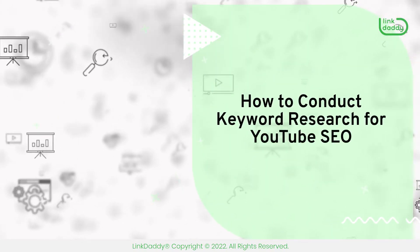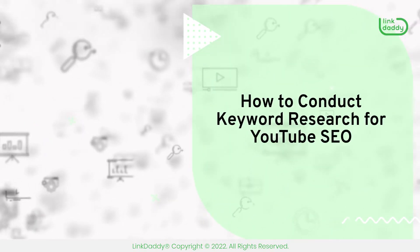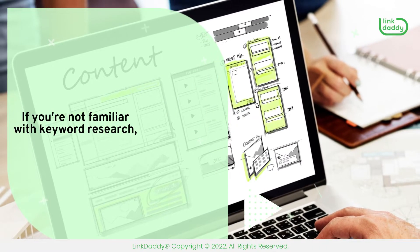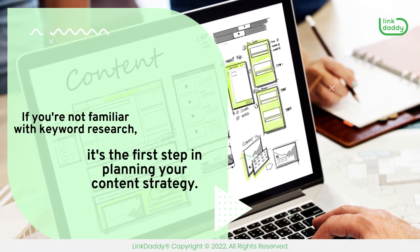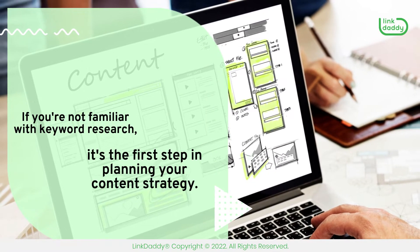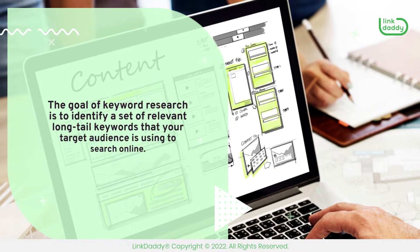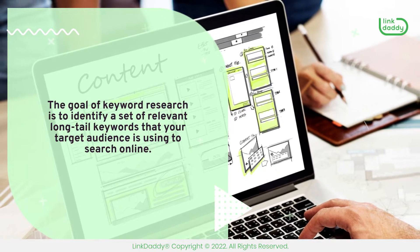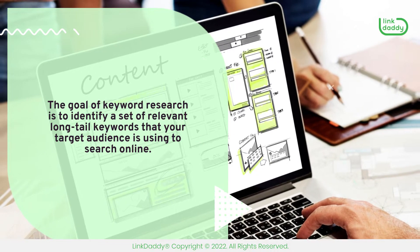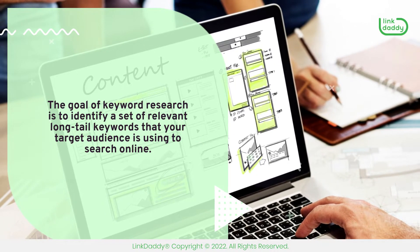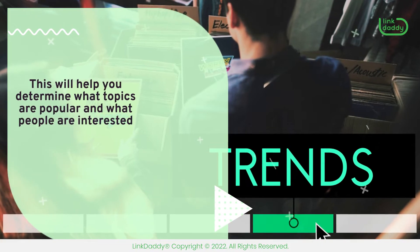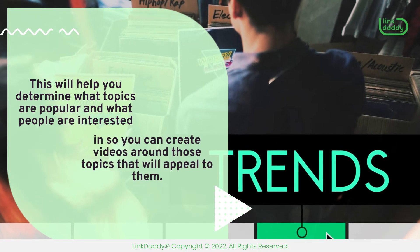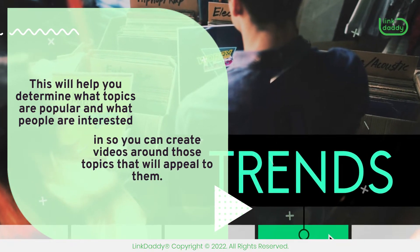How to Conduct Keyword Research for YouTube SEO. If you're not familiar with keyword research, it's the first step in planning your content strategy. The goal of keyword research is to identify a set of relevant long-tail keywords that your target audience is using to search online. This will help you determine what topics are popular and what people are interested in, so you can create videos around those topics that will appeal to them.